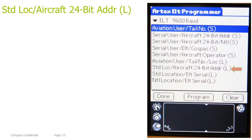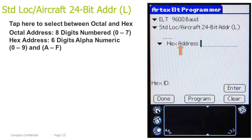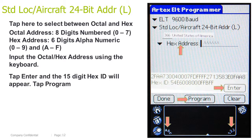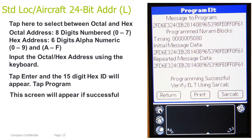Location, Aircraft 24-bit Address Long. Tap here to select between octal and HEX. Octal address is 8 digits, numbers 0–7, and HEX address is 6 digits, alphanumeric, 0–9 and A–F. Input the octal or HEX address using the keyboard. Tap Enter and the 15-digit HEX ID will appear, then tap Program. This screen will appear if successful.